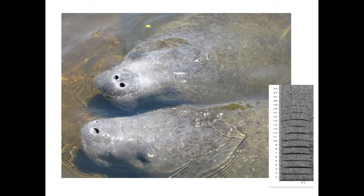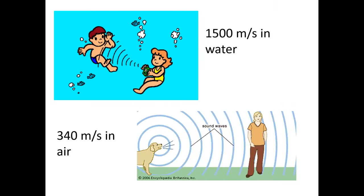I want to give you a brief primer into acoustics and how sound propagates, particularly in water, and how animals use sound to communicate. Interestingly, sound travels a lot faster in water than in air — about 1,500 meters per second in water and about 340 meters per second in air. Water is a lot denser than air, which allows sound to travel a lot further.